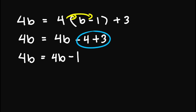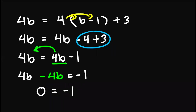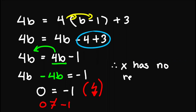Now we can move the terms. So we move 4b to the left side. We'll have 4b, change the sign, minus 4b equals negative 1. Simplifying, 4b minus 4b is 0, and the right side is negative 1. Notice that we don't have any variables anymore. Our equation is 0 equals negative 1. So can you spot the issue here? Well, 0 equals negative 1 cannot be true. So this is a contradiction, since 0 is not equal to negative 1. This implies that x has no real solution.